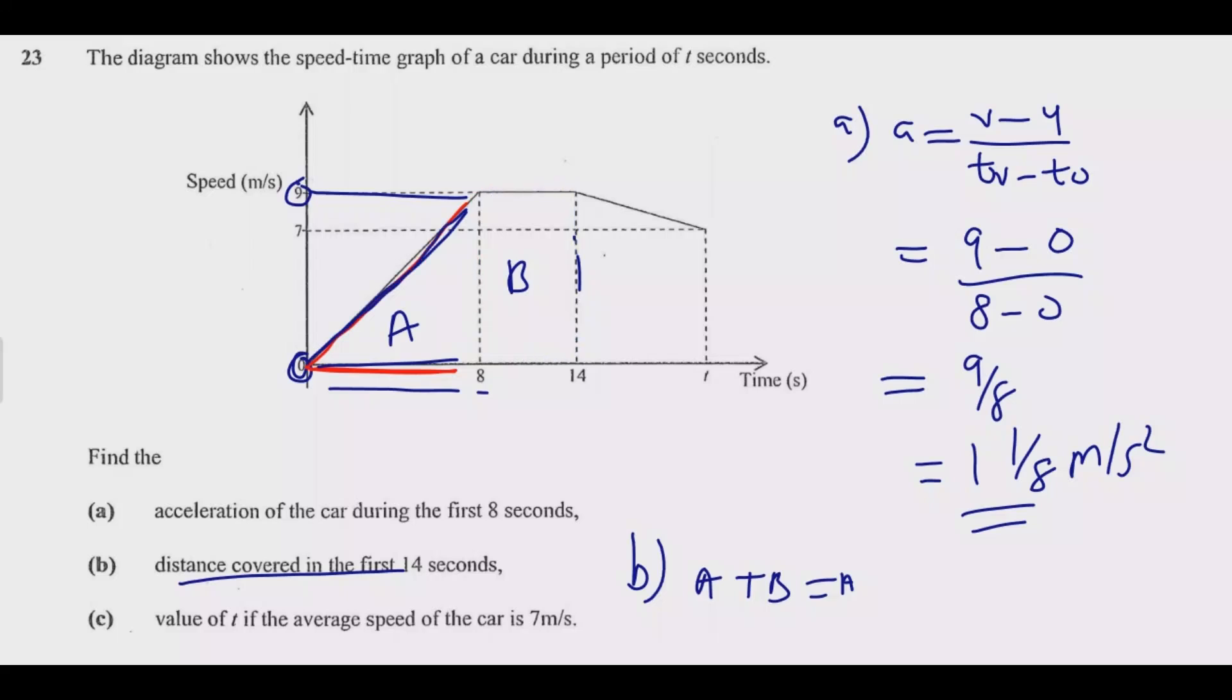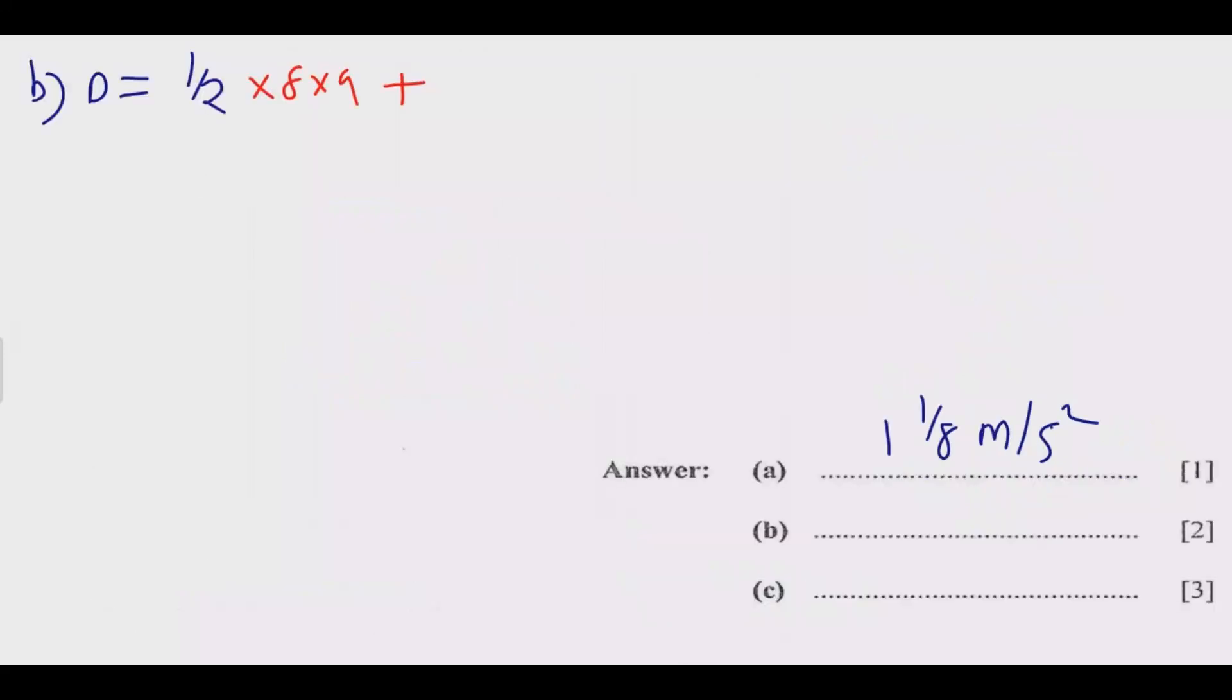The rectangle will be 9 times the difference between these two. So it will be 9 multiplied by 14 minus 8, which will give me 4 times 9, because half times 8 is 4 times 9, then plus 9 times 6. Then I'm going to have 36 plus 9 times 6 is 54, which will give me 90. So it will be 90 meters.